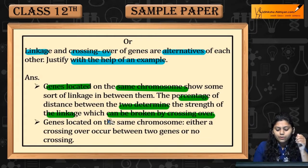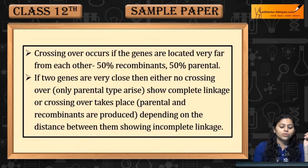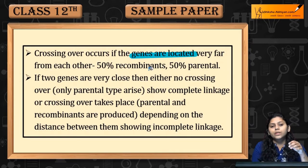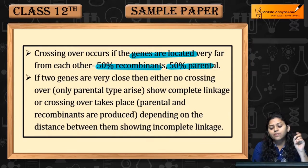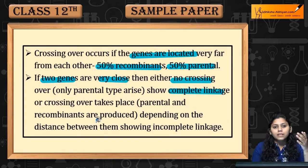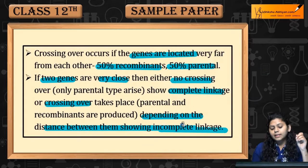When genes are located on the same chromosome, there is either crossing over between two genes or no crossing over. If two genes are very close, there is no crossing over and they show complete linkage. Depending on the distance between them, genes may show incomplete linkage.